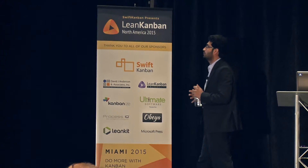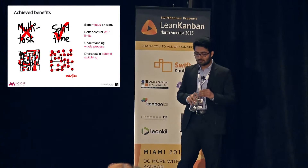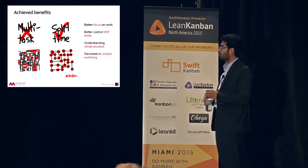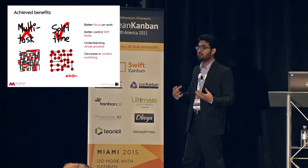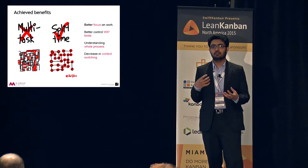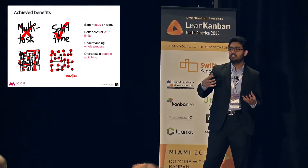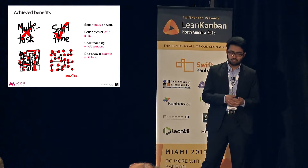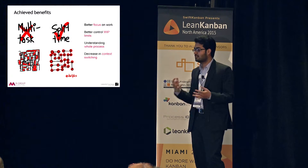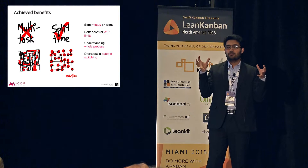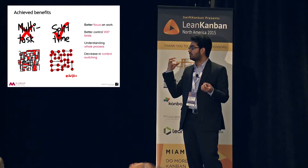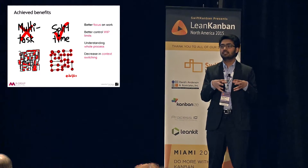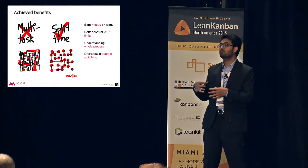The third benefit is that teams became more aware of and focused on the work. Earlier, priorities were constantly changing as senior people or management would keep adding new tasks. With Kanban, there is more focus on understanding the process, and it effectively forced teams to stop switching tasks constantly — implementing a strategy to focus on a task, finish it individually or collectively, and then move on to the next.